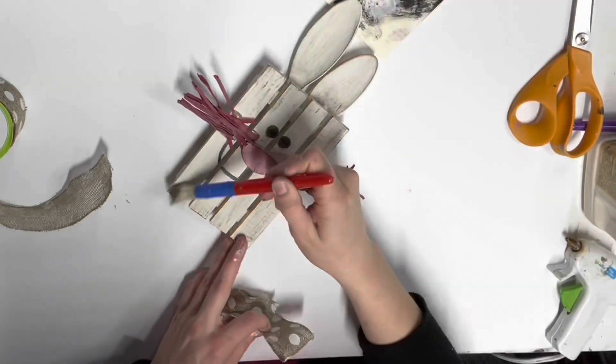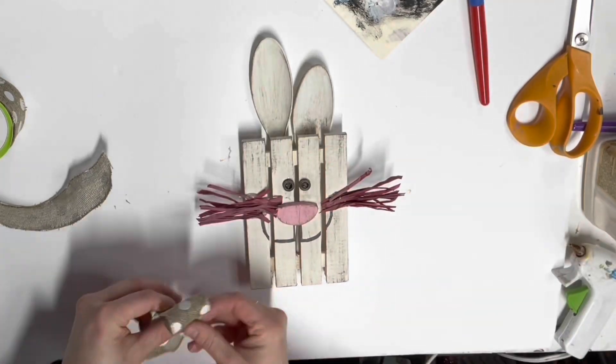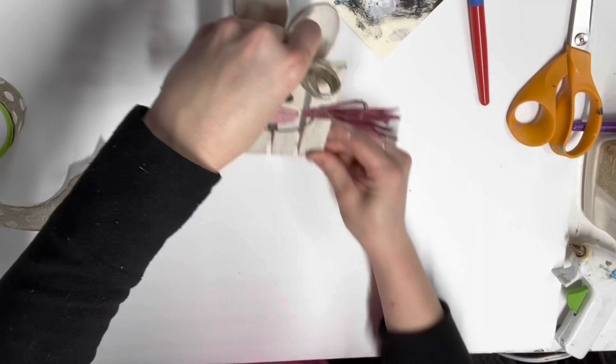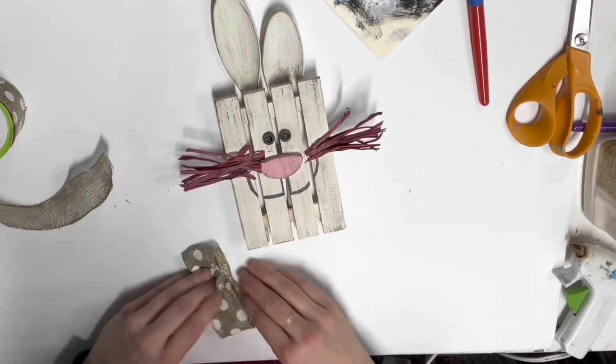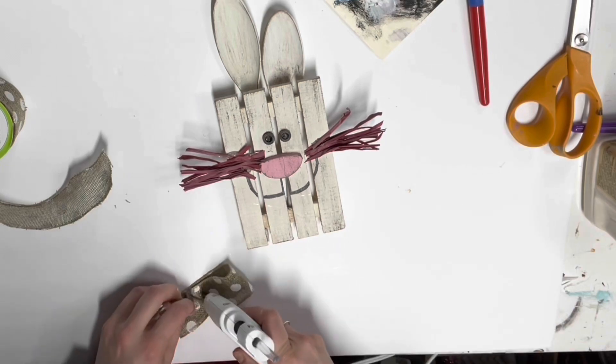And then I just took some light brown paint. I think it was called chocolate sprinkle by apple barrel. And I just very lightly dry brushed it across there. And then this is the part, like I told you guys, that took me forever to figure out. I made like four bows cause I really wanted a bow on here.